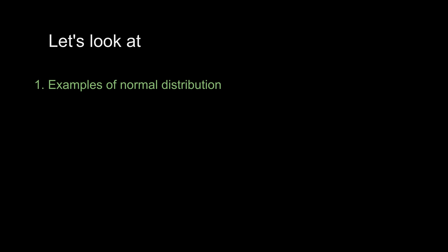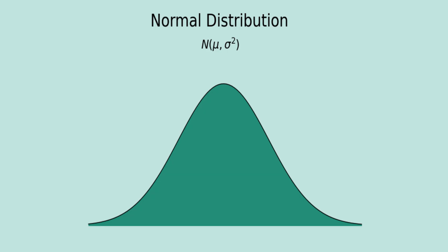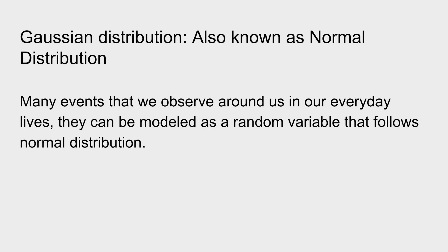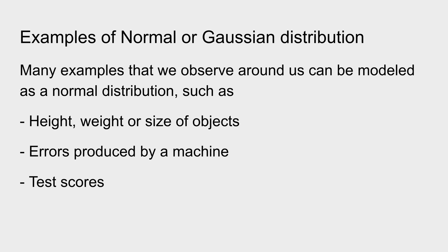Let's start with examples of normal distribution. Normal distribution looks something like this. So why the name normal distribution? Normal distribution captures events that we see in our day-to-day lives or are very common, such as height, weight, or size of objects, errors produced by a machine, or test scores. That is why it has the name normal distribution.